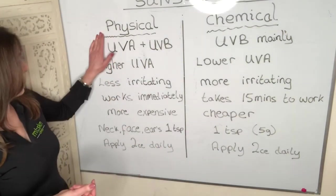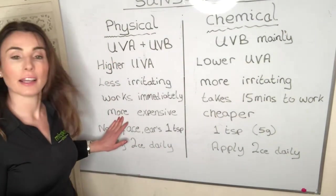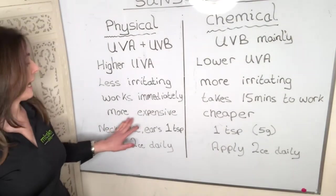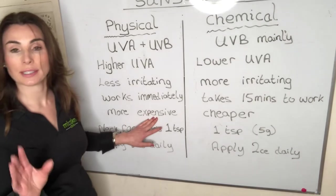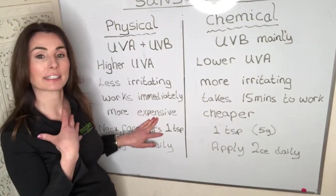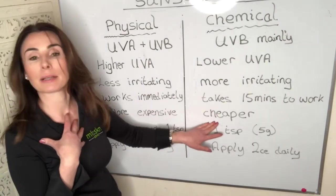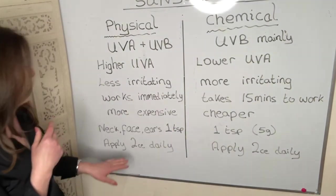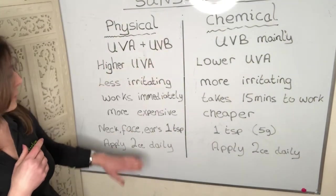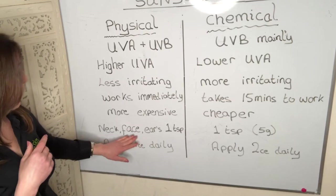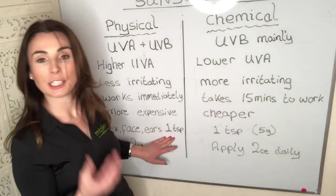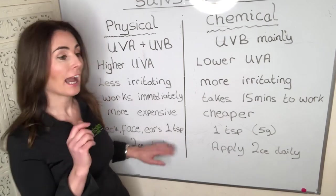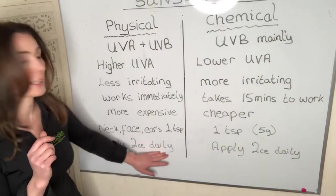The drawback of physical sunscreens is that they're typically more expensive and found mainly in skin care clinics. A common approach is to use physical sunscreen for the face and neck, and chemical-based sunscreen for the body on sun holidays. Both types require about a teaspoon — five grams — applied to the face, neck, and ears, twice daily.